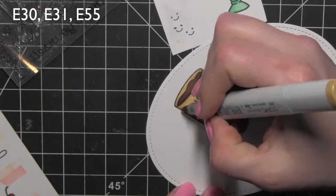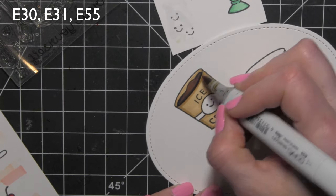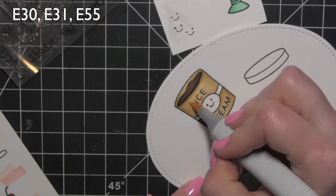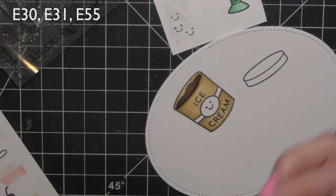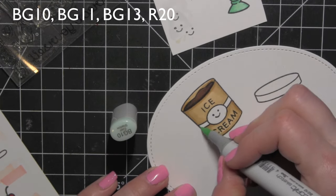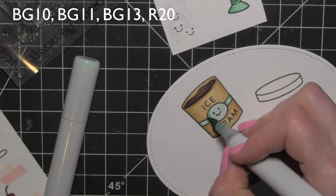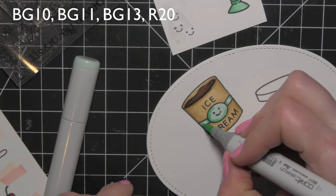Get that all blended out and then for the label and the face on the ice cream bucket I am going to switch back to my aqua colors that I used for the dish and use BG10, 11, and 13 and then a tiny bit of R20 for the cheeks on the face.